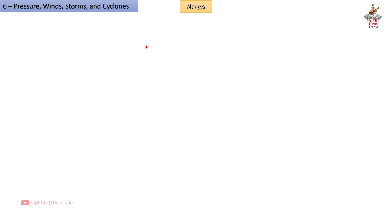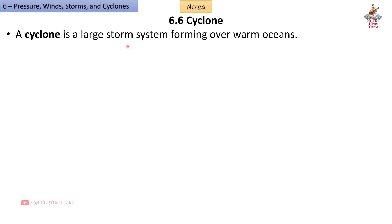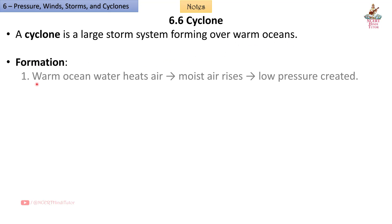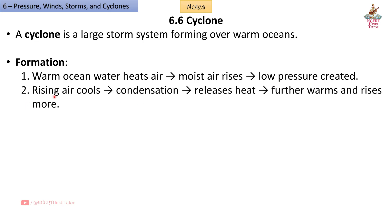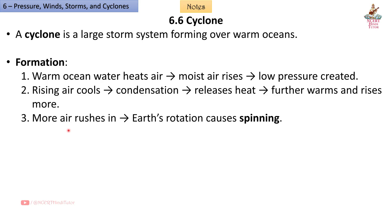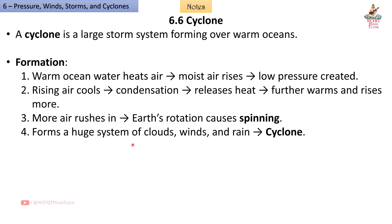6.6 Cyclone. A cyclone is a large storm system forming over warm oceans. Formation: First, warm ocean water heats air; moist air rises and creates low pressure. Second, rising air cools and condensation releases heat, further warming the air and causing it to rise more. Third, more air rushes in and Earth's rotation causes spinning. Fourth, it forms a huge system of clouds, winds, and rain — a cyclone.